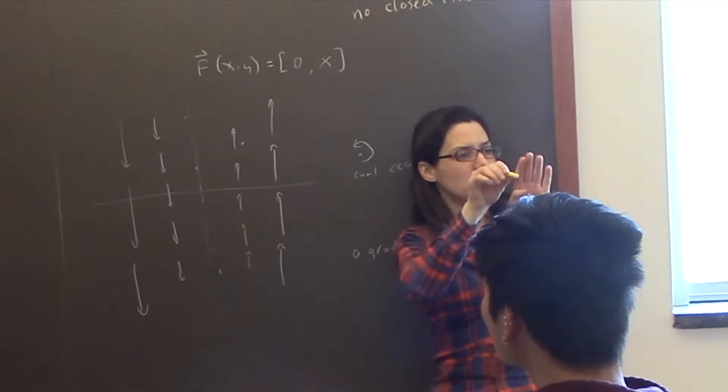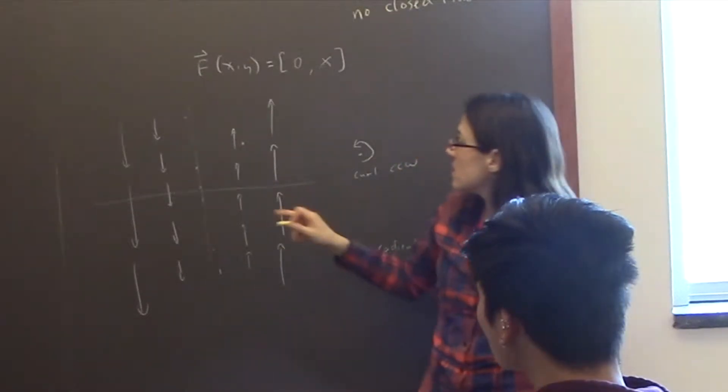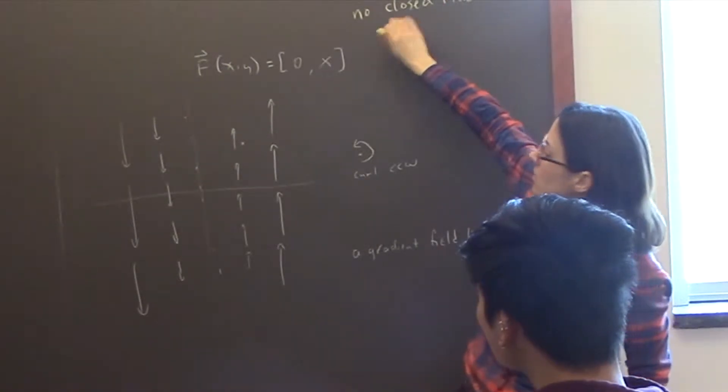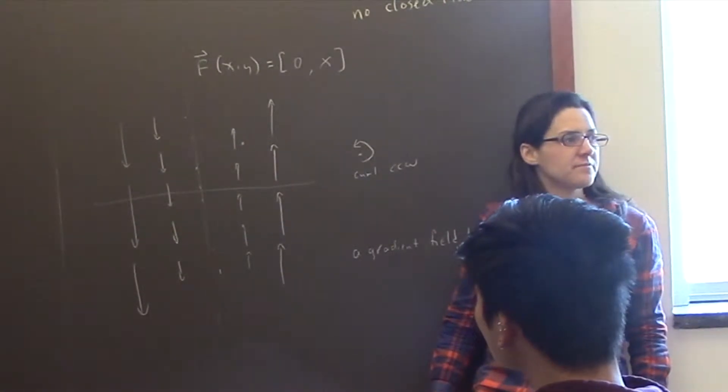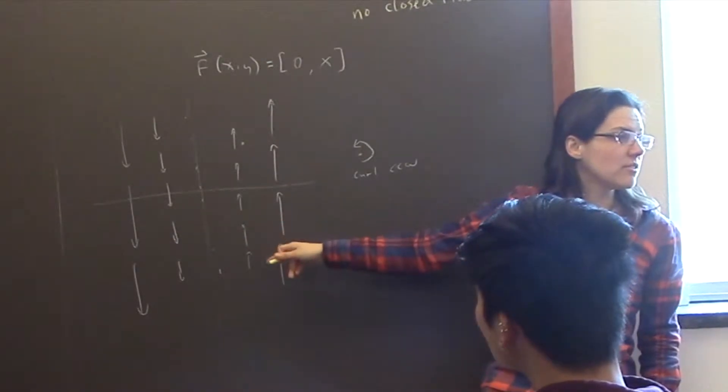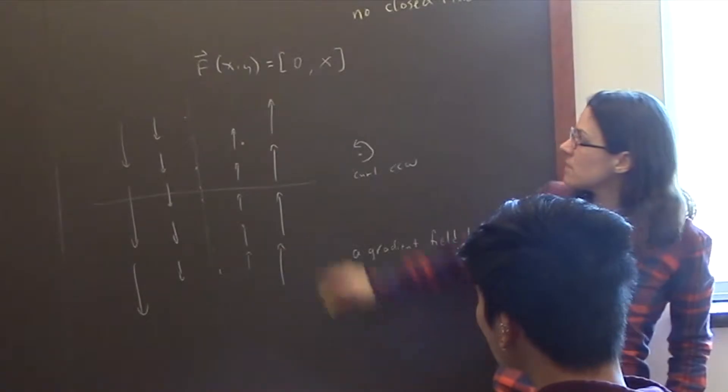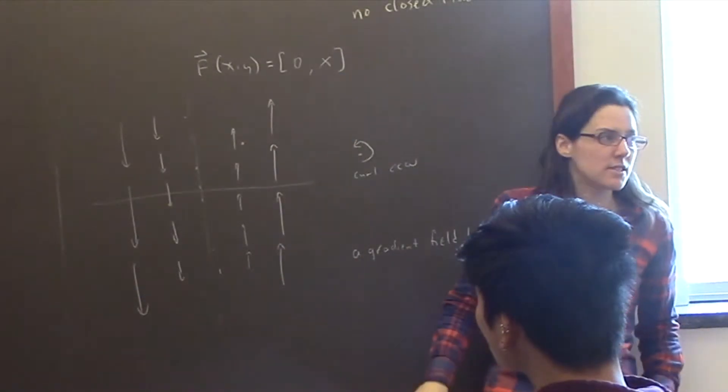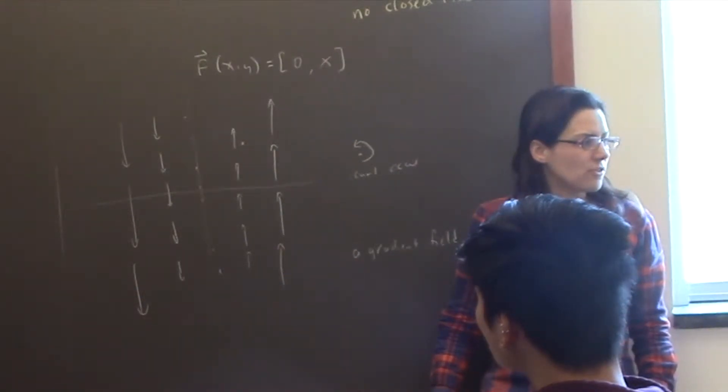Do you know what I mean? So this has non-zero curl and also all the flow lines are just vertical lines, so they're not closed. Based on the picture, all the flow lines are vertical, and we figured out an equation for this.